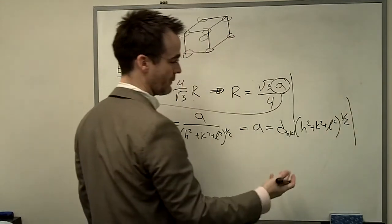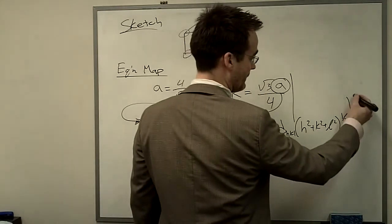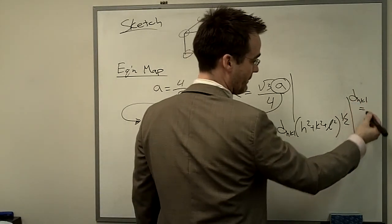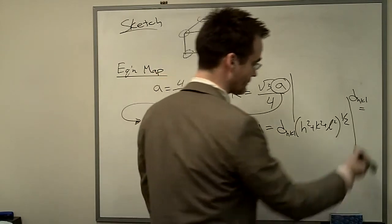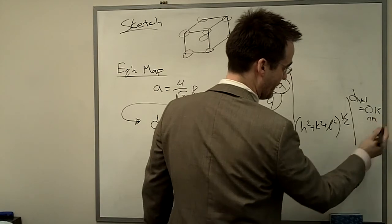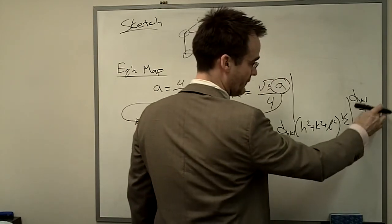A vertical line, what do we have and what don't we have? Well, we actually have d_HKL from the first part of the question, which was 0.12 nanometers. Let's fix that too.